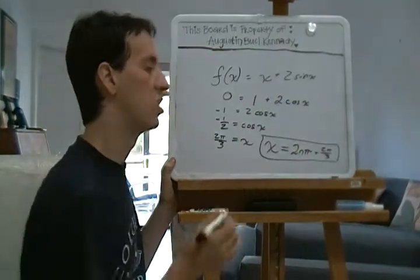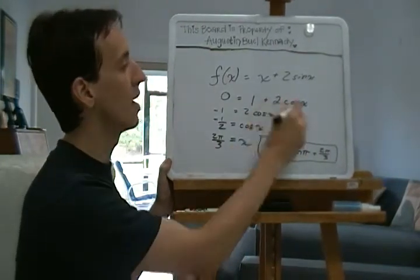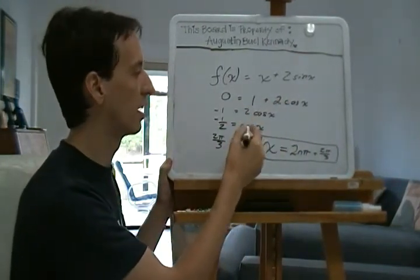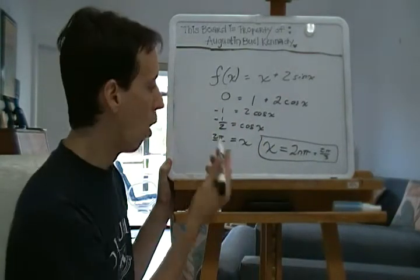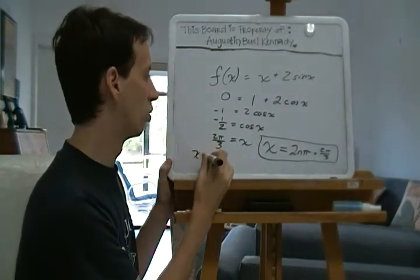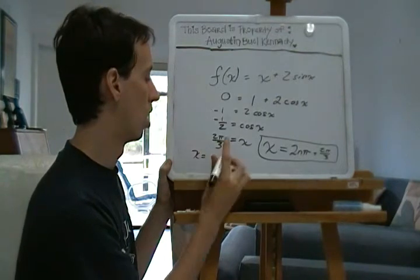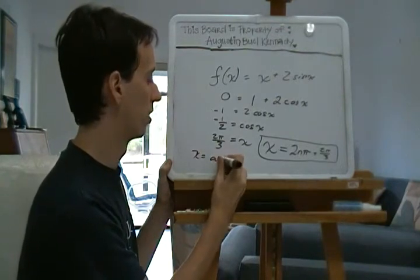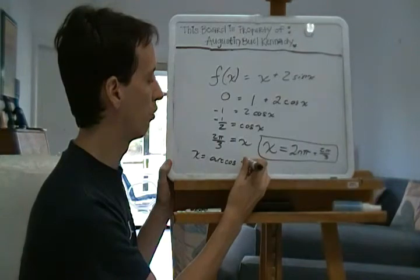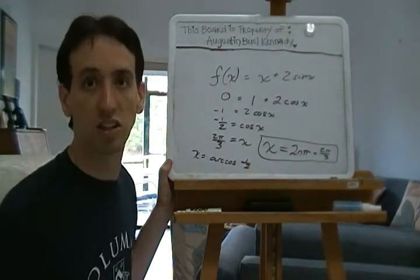So the final answer is x = 2nπ + 2π/3 for any integer n. If you managed to get that, great job. If you at least set it up correctly and got cos(x) = -1/2 or wrote x = arccos(-1/2), that's correct too.